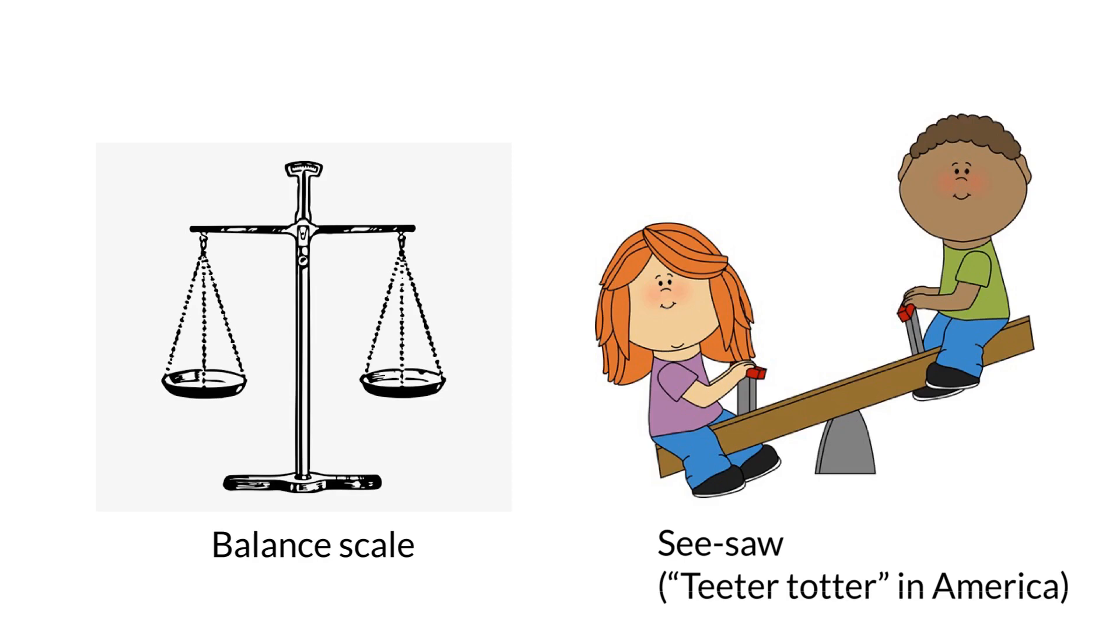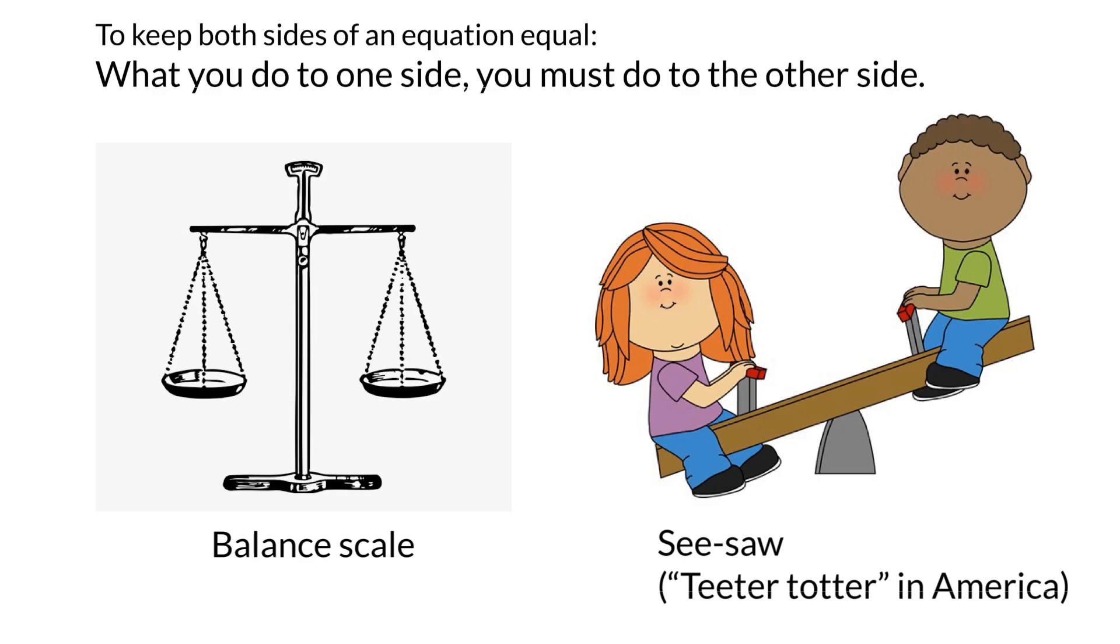So let's make a summary. To keep both sides of an equation equal, what you do to one side, you must do to the other side.